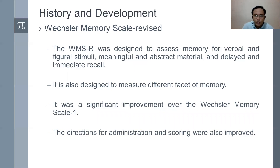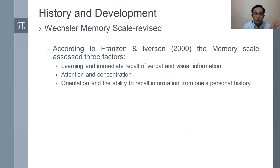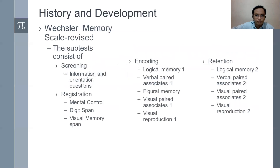It was a significant improvement over Weschler Memory Scale 1. The directions for administration and scoring were also improved. According to Franzen and Iverson (2000), the revised memory scale focuses on three factors compared to WMS 1: learning and immediate recall of verbal and visual information, attention and concentration, and orientation and the ability to recall information from one's personal history.